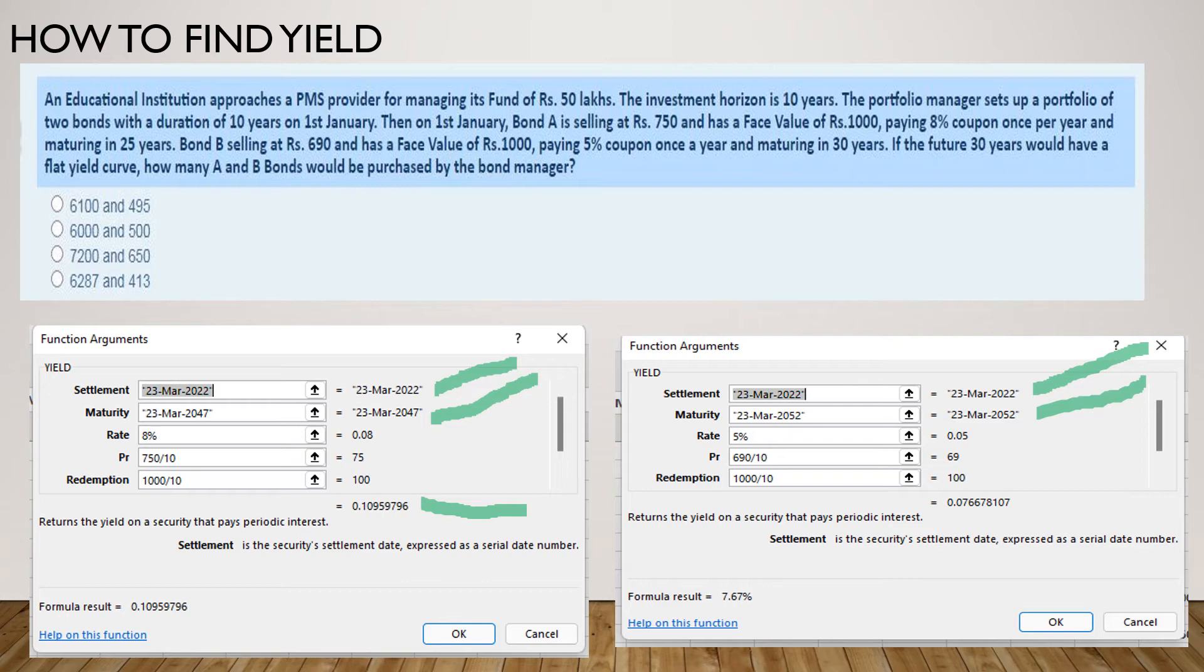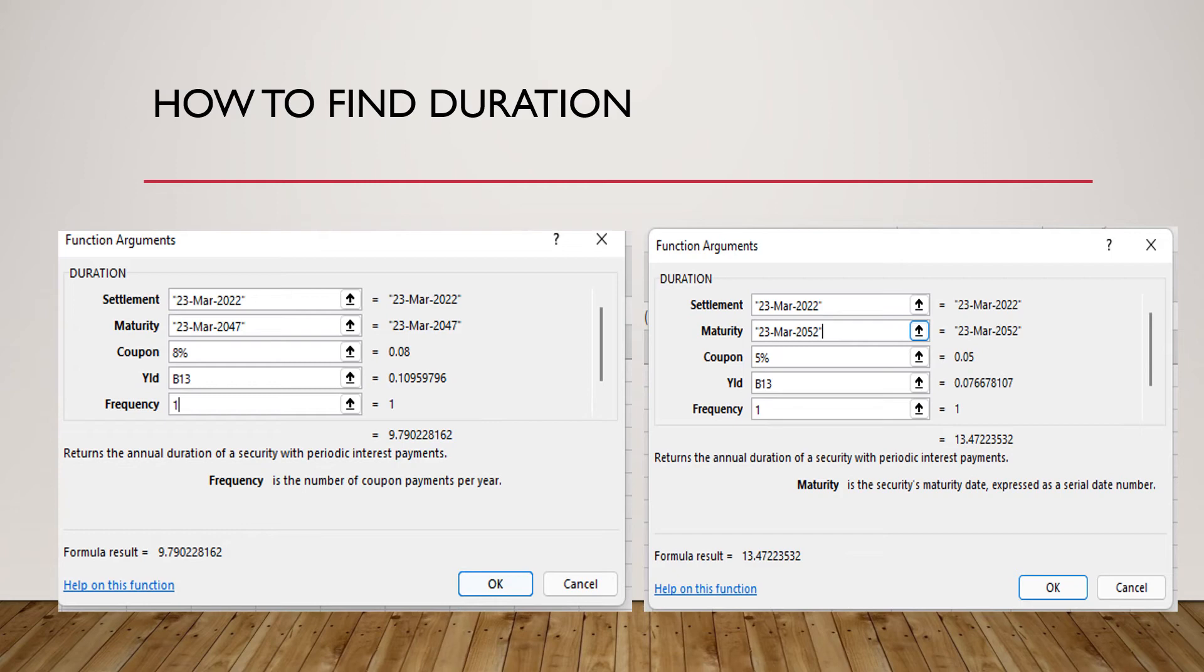Once you have got the yield, you need to work on the second step which is how to find the duration. Duration can be found through a formula again in Excel which is duration. While finding the duration you have to again be careful with the dates. Do not forget to put the coupon and the yield that you calculated for each of the bonds. The yield has to be put here as we have arrived at.